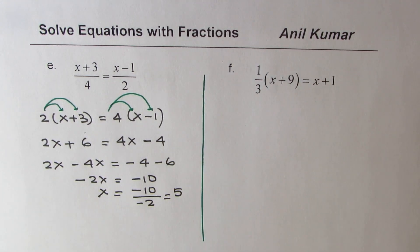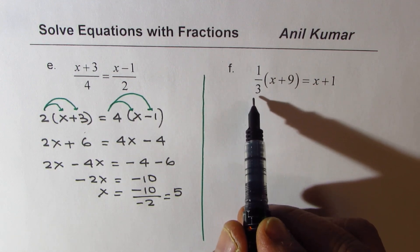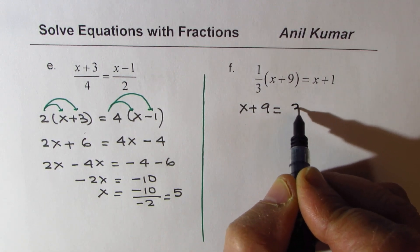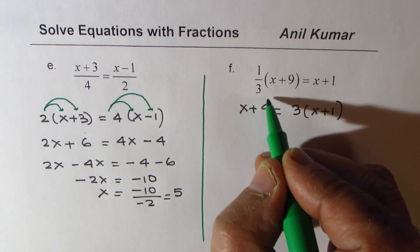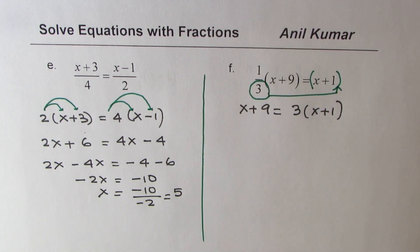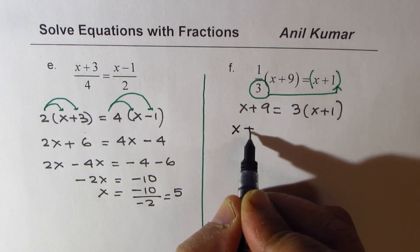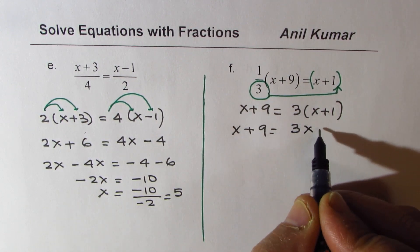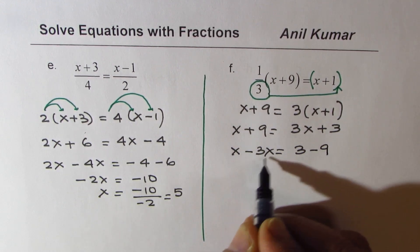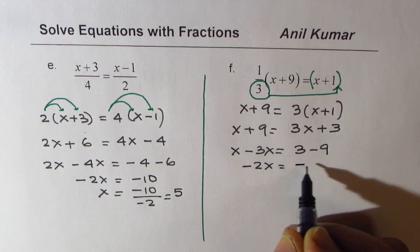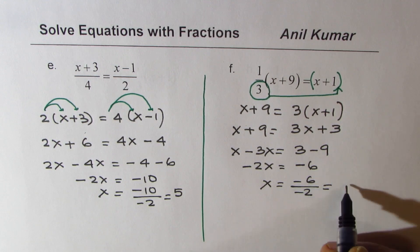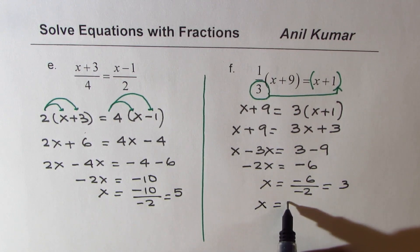Next: 1 over 3 times (X plus 9) equals X plus 1. Cross multiplying gives X plus 9 on the left and 3 times (X plus 1) on the right. Expanding: X plus 9 equals 3X plus 3. Bringing terms together: X minus 3X equals 3 minus 9, so minus 2X equals minus 6. Therefore X equals minus 6 divided by minus 2, which is X equals 3.